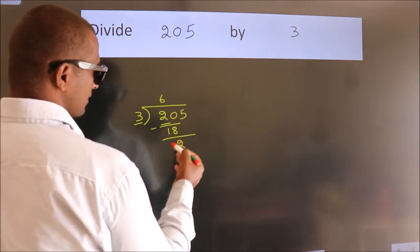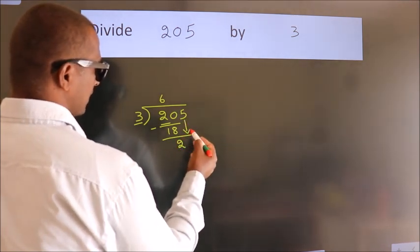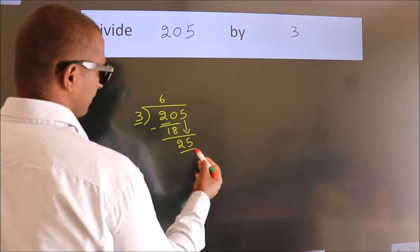After this, bring down the beside number. So 5 down. So 25.